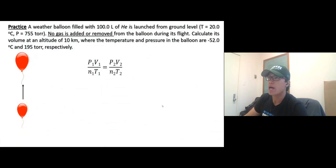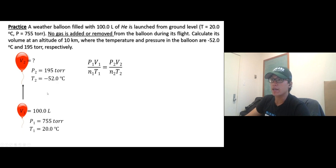Let's try this one. A weather balloon filled with 100 liters of helium is launched from ground level. That's situation one. Now situation two: no gas added or removed, so N is